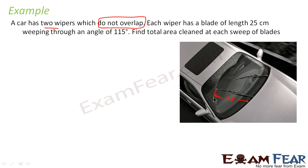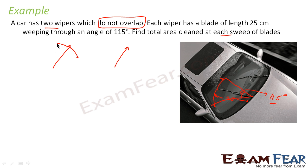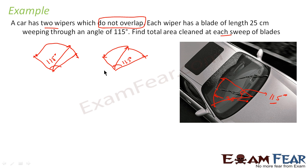The wiper moves in an arc — this is the angle at which it wipes, at the maximum distance it covers. The maximum angle it wipes is 115 degrees, as defined from one end position to the other. We have to find the total area cleaned at each sweep of the blade. Both blades each sweep 115 degrees.